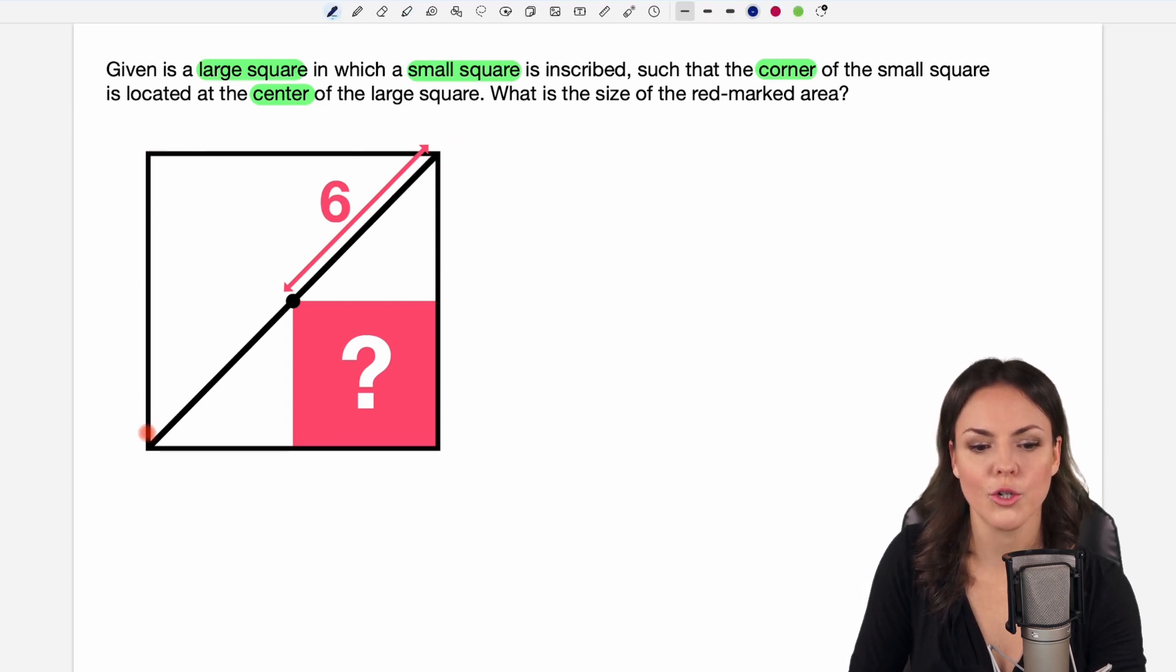We have our large square here and in this large square we have the small square such that the corner of the small square is located at the center of the large square.